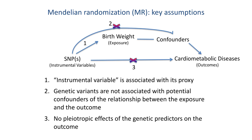Second, the genetic variable cannot be directly associated with any potential confounders of the relationship between the exposure and the outcome, which includes unmeasured confounders. Note in this diagram that confounders have to cause the outcome, but they can be spuriously associated with exposure and still bias the resulting estimate. This is harder to verify empirically, but the random assignment of the genotype, in theory, ensures there is no causal path leading to the confounders, if the randomization worked as intended.